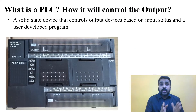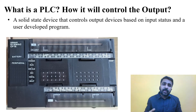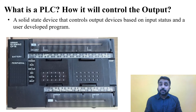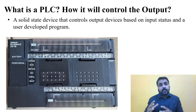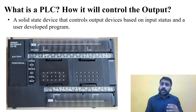Today's topic is: what is a PLC and how does it control the output? The outputs can be a motor, blower, or any 230-volt appliance — sometimes a three-phase motor as well. The PLC gives output at 24 volts, so using 24 volts, we cannot directly control 230-volt motors.